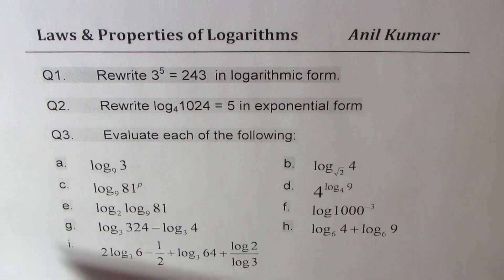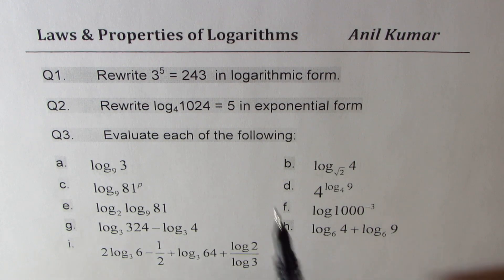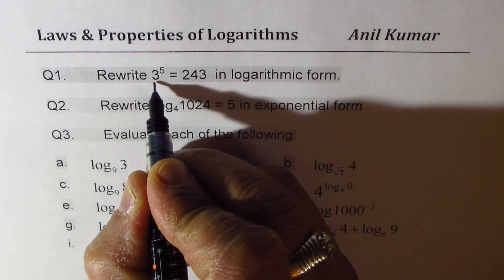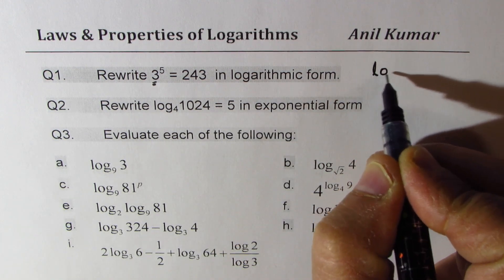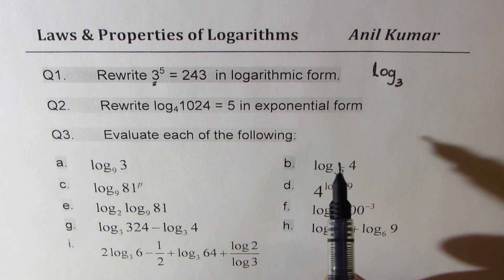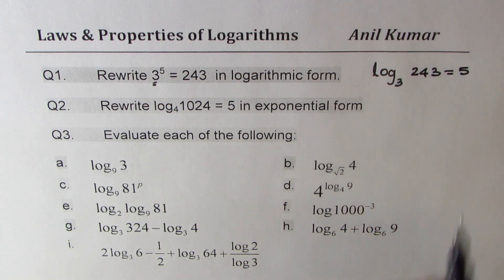Now let's begin with solving questions. Here are three questions for you to solve. Question number one: rewrite 3 to the power of 5 equals 243 in logarithmic form. The key is to keep the base the same — base is 3. So when you write in logarithmic form, write log to the base 3. Therefore, log to the base 3 of 243 equals 5. That is how question one is answered.